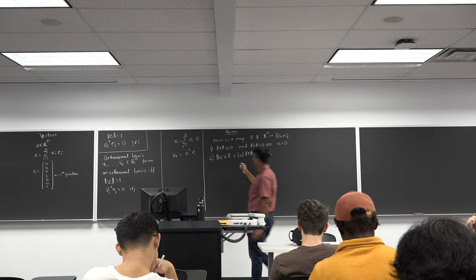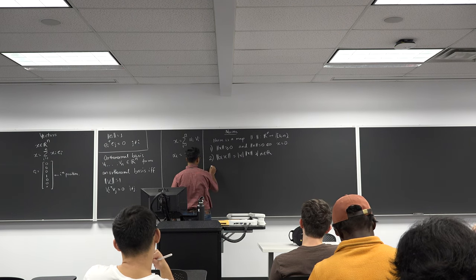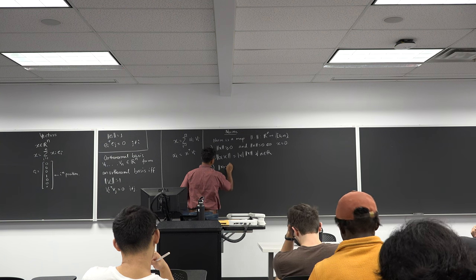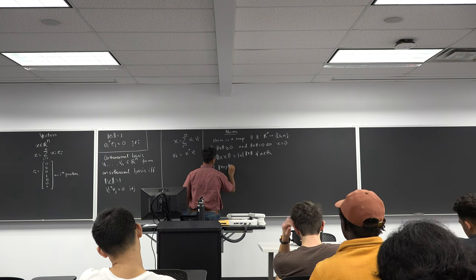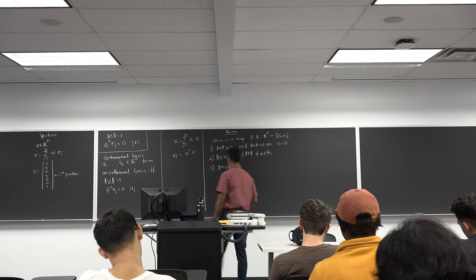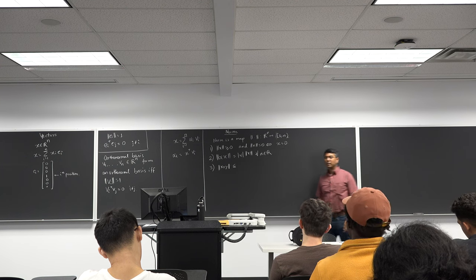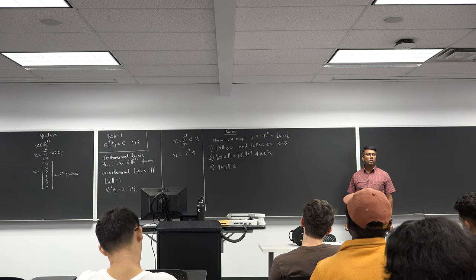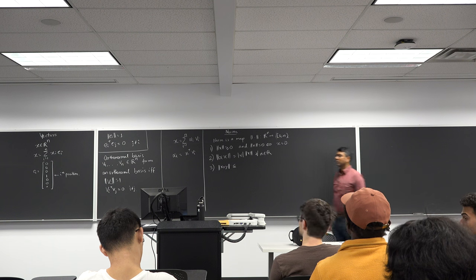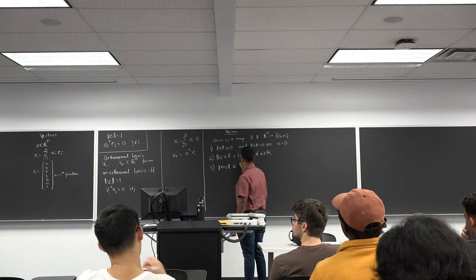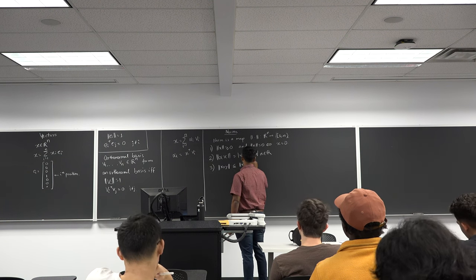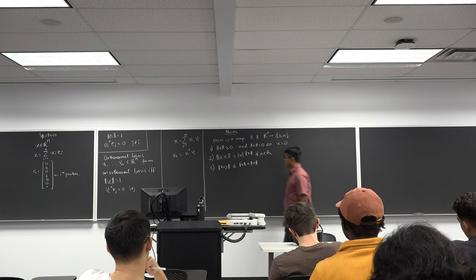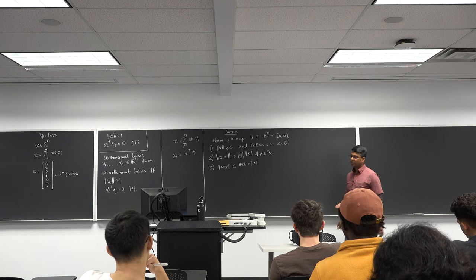There is a reason why we talk about norm in its most general sense — we'll get to it very soon. The third property is the triangle inequality: the norm of x plus y is less than or equal to the norm of x plus the norm of y.